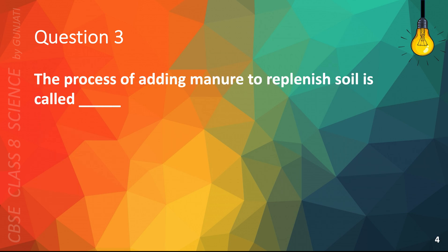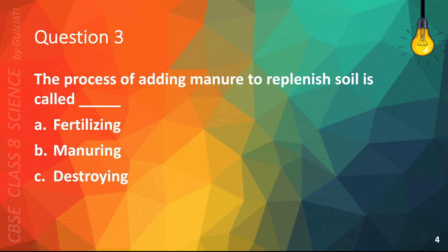Question 3. The process of adding manure to replenish soil is called: A. Fertilizing, B. Manuring, C. Destroying, or D. Recharging. The correct answer is B. Manuring.